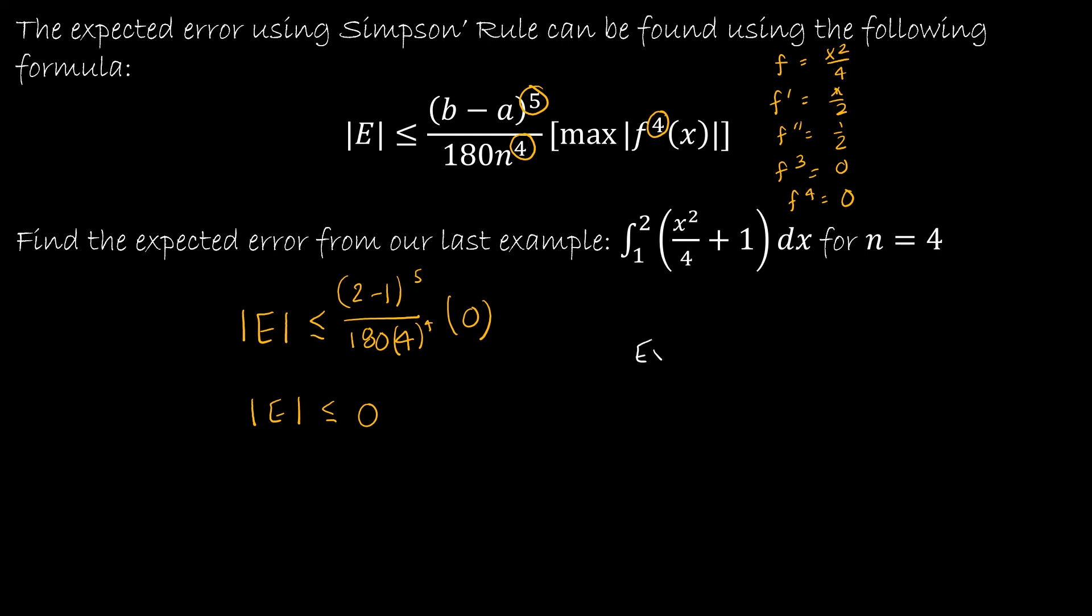And we had found that as well. When we did the exact value, we found it was 19 twelves. And when we did Simpson's rule, we found the answer was 19 twelves. So we can see that we got the exact same answer either way. But again, not a difficult formula to use.